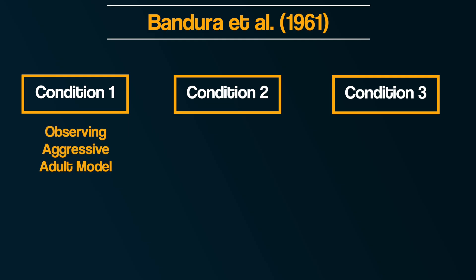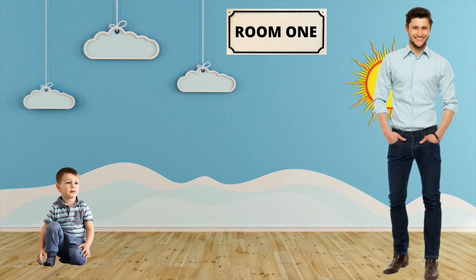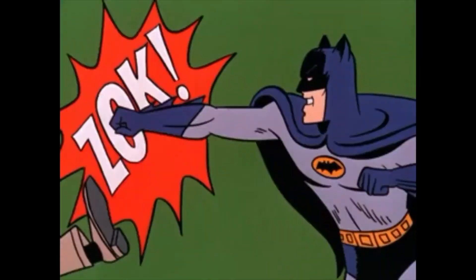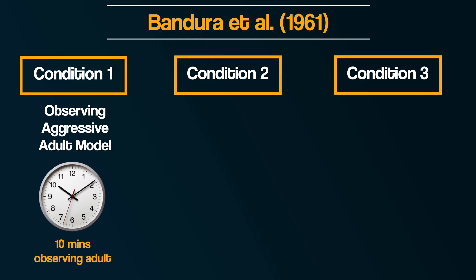Experimental Condition 1: observing aggressive adult models. In this condition, the adult model behaved in aggressive ways. This included the adult tipping the Bobo Doll over on its side and punching it repeatedly in the nose. They picked up the mallet and hit the Bobo Doll on the head and then tossed the Bobo Doll up in the air and kicked it about the room. They were also verbally aggressive with phrases such as 'Suck him in the nose,' 'Kick him,' and 'Pow.' The adult behaved this way for 10 minutes.